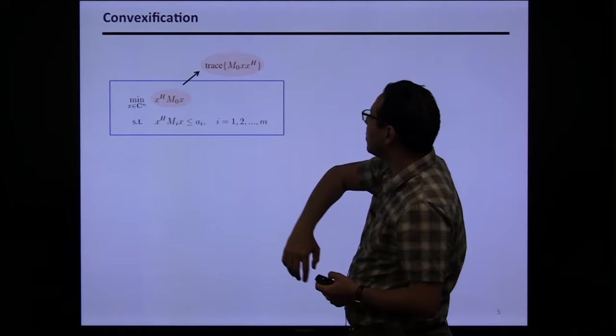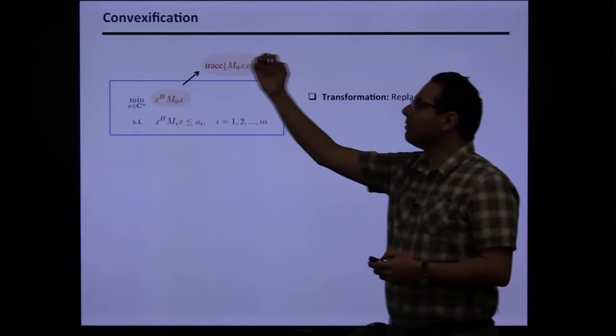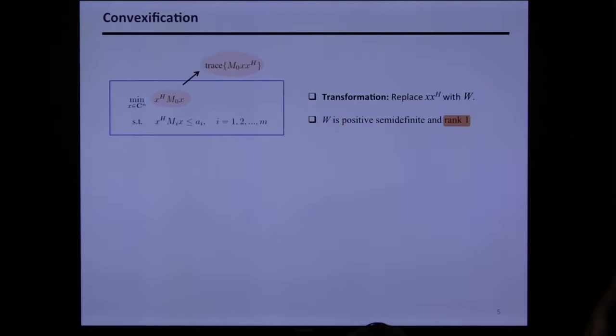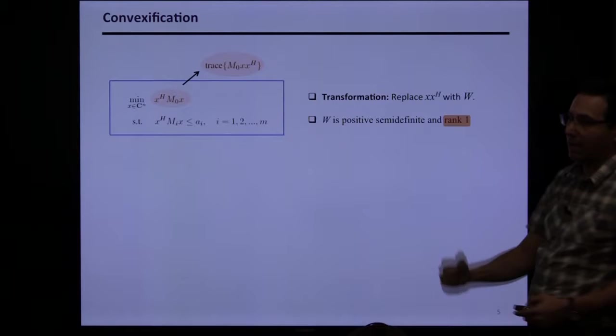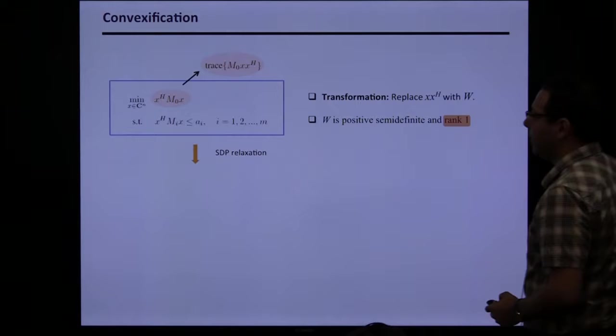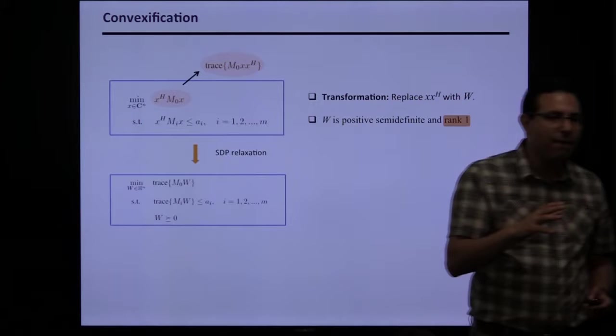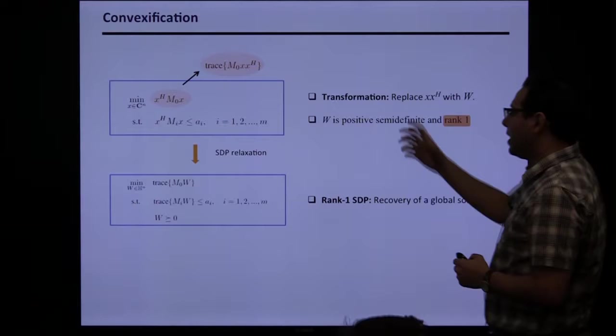Almost all optimization problems can be approximated by polynomial optimization, and polynomial optimization is equivalent to quadratic optimization. We know linear programming is easy, so the computational complexity is just about having quadratic equations. How can I deal with quadratic equations? I can use a trick: write xᵀMx as the trace of M·xxᵀ, then replace xxᵀ with a matrix W. Now quadratic terms in x are linear in W.